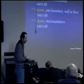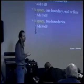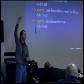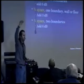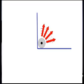Now if you put it into a quarter space — you have two boundaries, you put it into a corner — you're putting it into a quarter amount of space. So you actually add 6 dB.